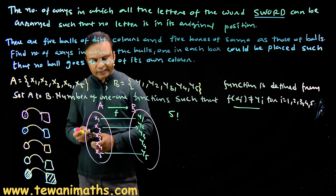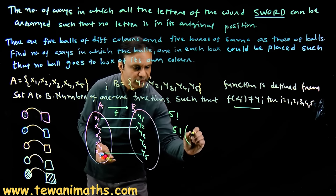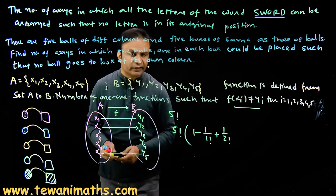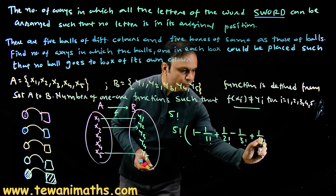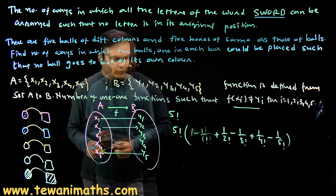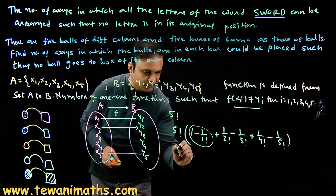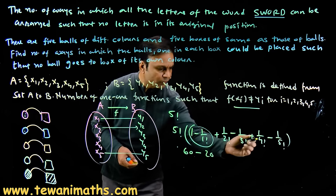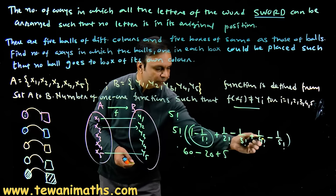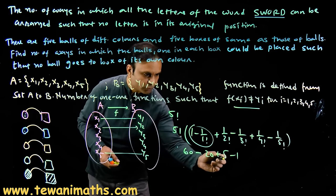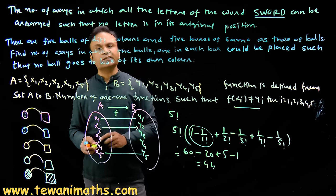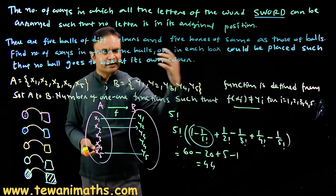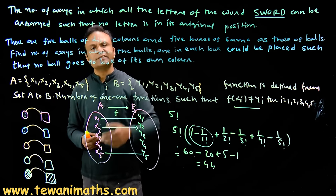So for all three statements — first, second, and third — the answer will be the same. The derangement formula for 5 objects is: D(5) = 5! × (1 − 1/1! + 1/2! − 1/3! + 1/4! − 1/5!). Simplifying: 120 − 120 + 60 − 20 + 5 − 1 = 44. So in each case the answer is 44, showing that very different-looking problems can all reduce to the same derangement.